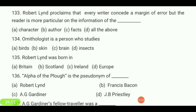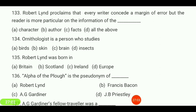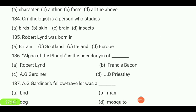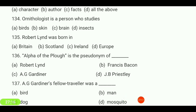An ornithologist is a person who studies — birds, skin, brain, or insects? Your answer is 'birds.' Robert Lind was born in — Scotland, Ireland, or Europe? Your answer is 'Ireland.'